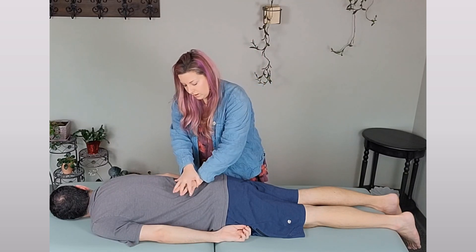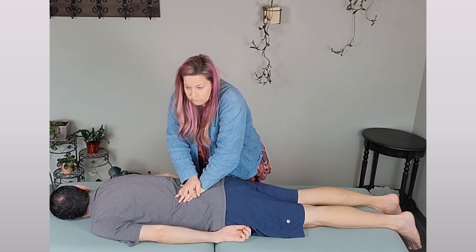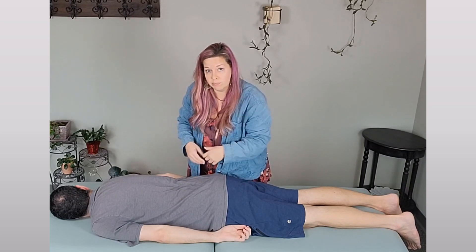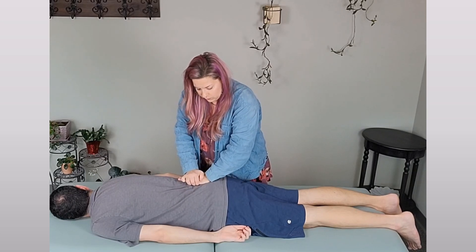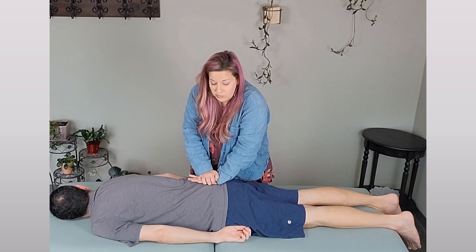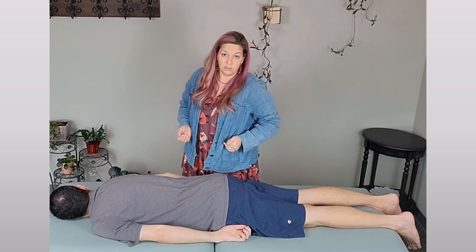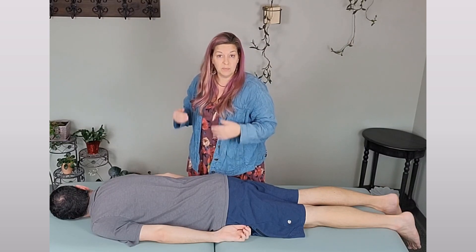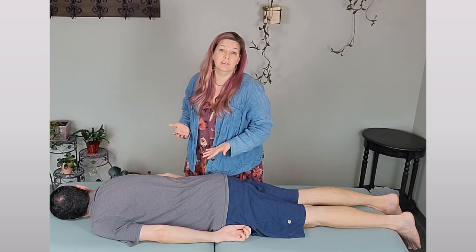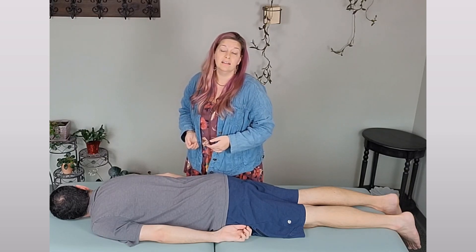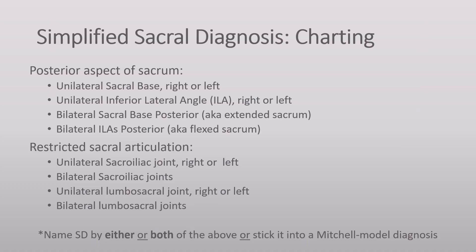And then also you want to spring on each sacral base — left side, right side — and see: does it resist you springing it? Is it being held more posteriorly, or does it allow you to spring it? And also you want to go to the ILA on each side, spring on the right, spring on the left. So for charting, if it was the right sacral base that wouldn't allow me to spring it forward, I would say right sacral base is posterior. Or if instead it had been the left ILA that resisted and wouldn't let me spring it forward, I would say the left ILA is posterior. Once you've felt where the sacrum does not want to spring, you can name the dysfunction based on which part of the sacrum is being held more posteriorly, or which articulations seem to be restricted.